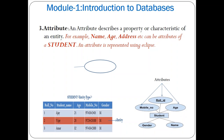What is an attribute? An attribute describes the properties or characteristics of an entity. For example, name, age, address can be attributes of a student entity type. An attribute is represented using an ellipse symbol. For a student entity type, the attributes are role number, student name, age, mobile number, and gender. In the ER diagram, the student is a strong entity (single rectangle box) because role number is the primary key. Role number is the key attribute, and age, mobile number, gender, and name are all regular attributes.